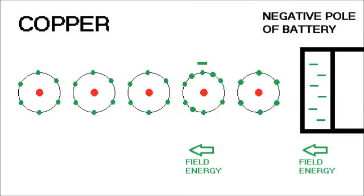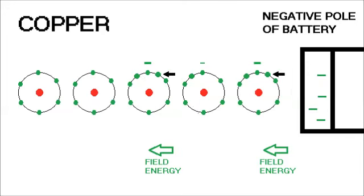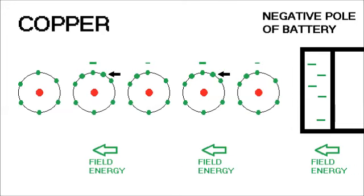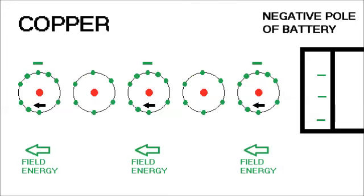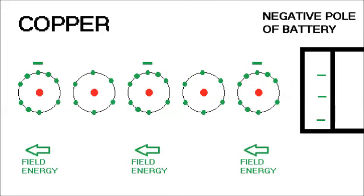As the battery generates more charges, they propagate to the neutrally charged conductor atoms, which themselves become little batteries and propagate charges down the wire away from the negative battery terminal. This process keeps repeating.